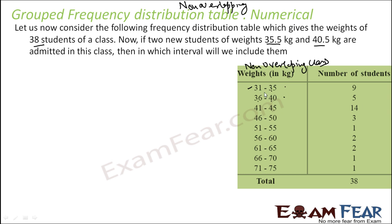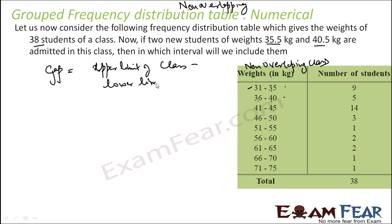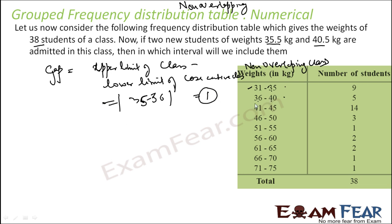There is a gap between the upper limit of one class and the lower limit of the next class. For example, 36 minus 35 — the gap is 1. Similarly, 40 minus 41 also gives an absolute value of 1. So we have to remove this gap and make it an overlapping class. The gap is 1, and it has to be distributed across the 2 classes.